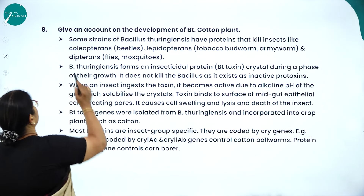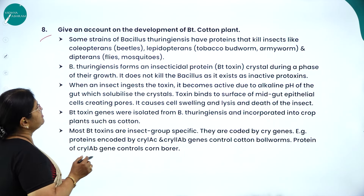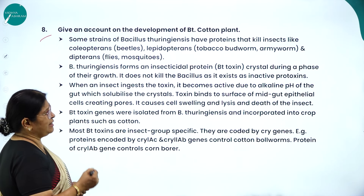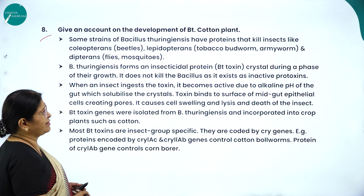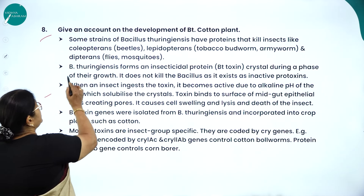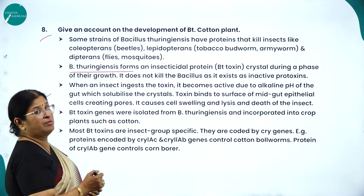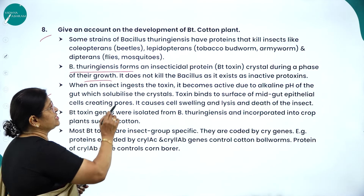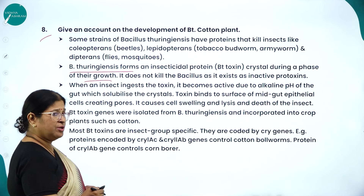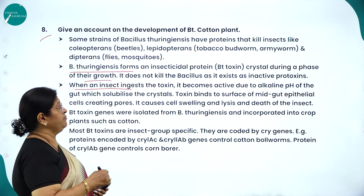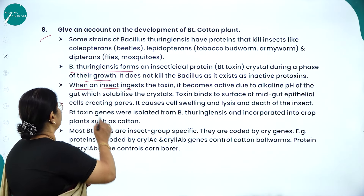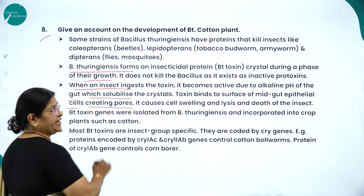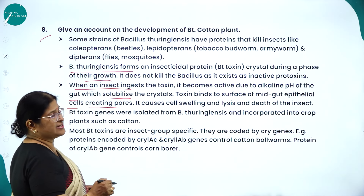Giving an account of the development of BT cotton (Bacillus thuringiensis cotton): some strains of Bacillus thuringiensis produce proteins that kill insects like coleopterans (beetles), lepidopterans like tobacco budworm or armyworm, and dipterans like flies and mosquitoes. Bacillus thuringiensis forms an insecticidal protein called BT toxin — a crystal protein (cry protein) — during a phase of their growth. It does not kill the bacterium as it exists as an inactive protoxin.